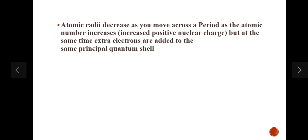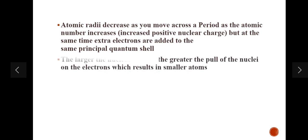Considering the first situation — what happens when you move across a period — the atomic radii decrease. As you move across a period, the atomic number increases, which indicates the number of protons is increasing, meaning the positive nuclear charge is increasing. At the same time, extra electrons are being added to the same principal quantum shell, which is the outer shell. The larger the nuclear charge, the greater the pull of the nucleus on the electrons, which results in smaller atoms.